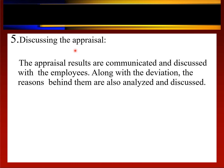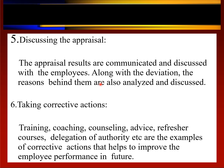Step 5: the results are communicated to the concerned employee and discussed with them. Along with the deviation, the reasons behind it are analyzed and discussed between the evaluator and the worker. Step 6: corrective actions are taken for better performance. Examples of corrective measures include training, coaching, counseling, advice, refresher courses, and delegation of authority. This helps in the improvement of employees' performance in the future.